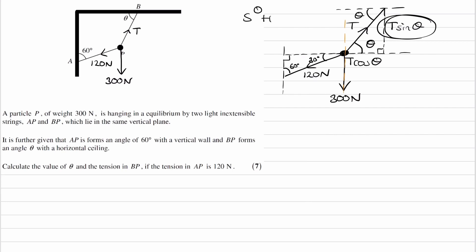If it's the opposite side, it will be equal to T sine theta, because sine is the one that involves the opposite. And if it's the adjacent side, it will be equal to T cos theta, because cos is the one that involves the adjacent.